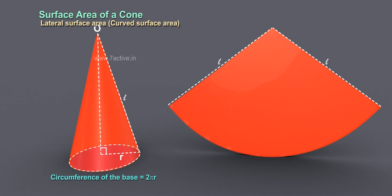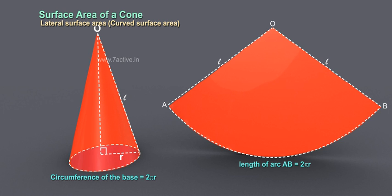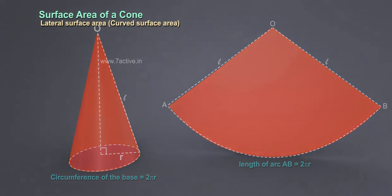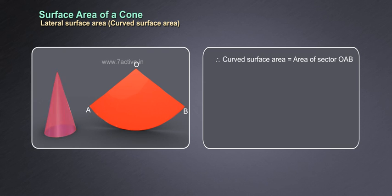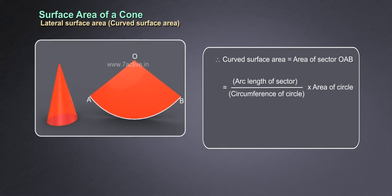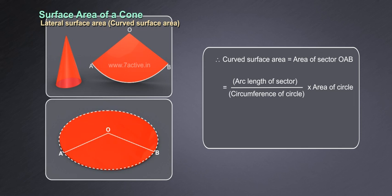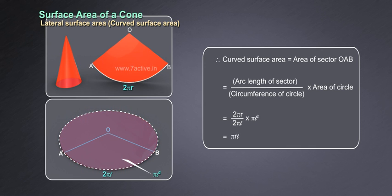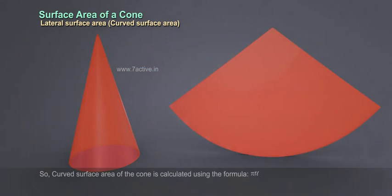Since the circumference of the base of the cone is 2πR, therefore the arc length AB of the sector of the circle is 2πR. Therefore, curved surface area is equal to 2πR by 2πL into πL² is equal to πRL.